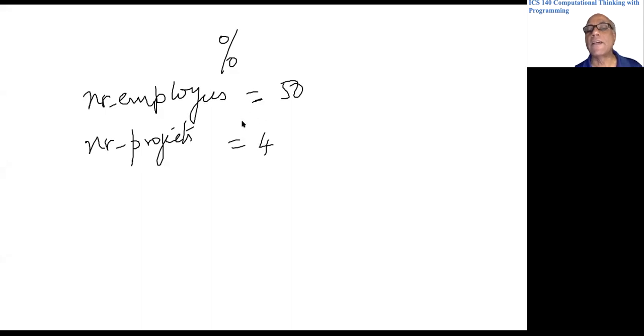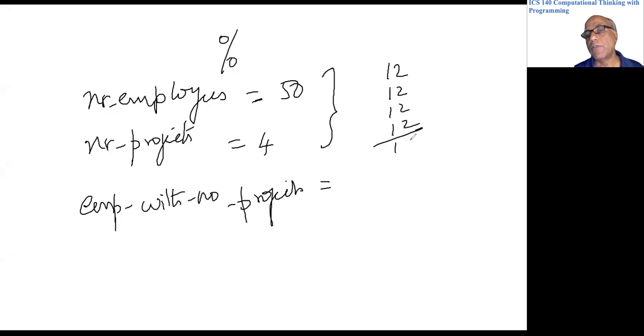Then how many employees are left without projects, with no projects, would be equal to, let's do this without Python. If you have four projects and 50 employees, you can put 12 in each one of them. That will give you 48 of them put in projects, you have two left, right?